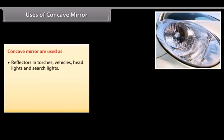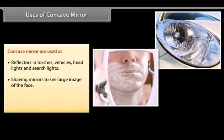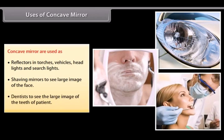When the object is at infinity, the image is formed at the focus — it is real and inverted, and smaller than the object. Uses of concave mirrors: reflectors in torches, vehicles, headlights, and searchlights; shaving mirrors to see large images of the face; and by dentists to see large images of the teeth of patients.